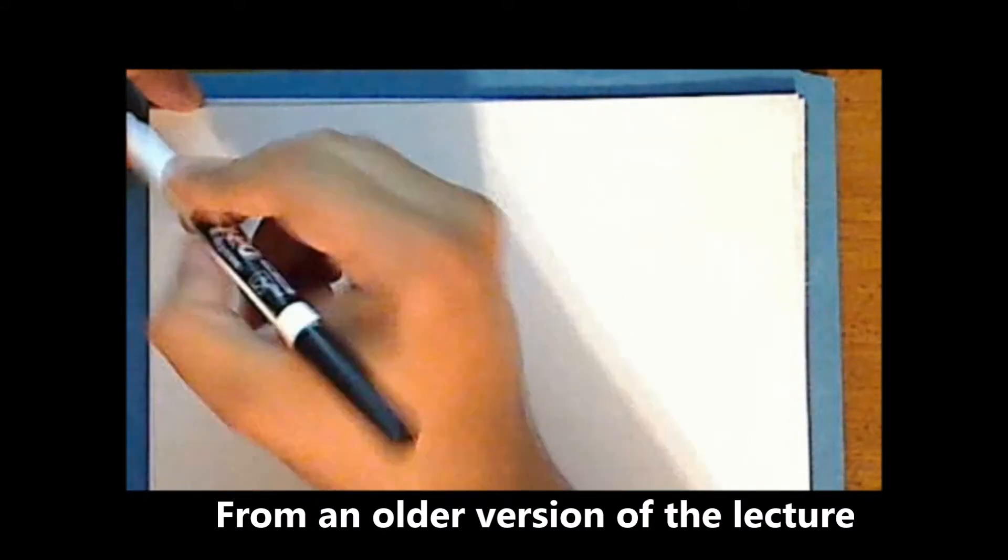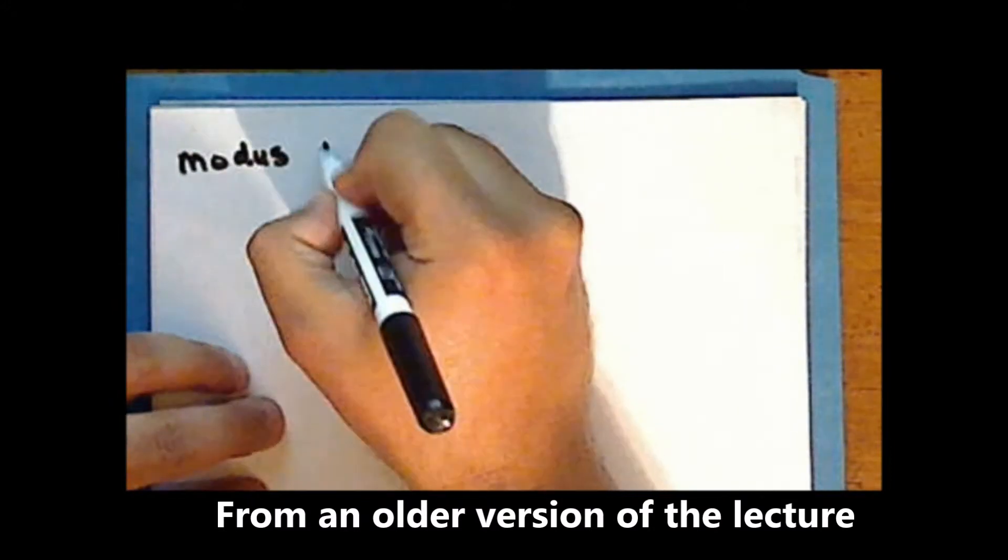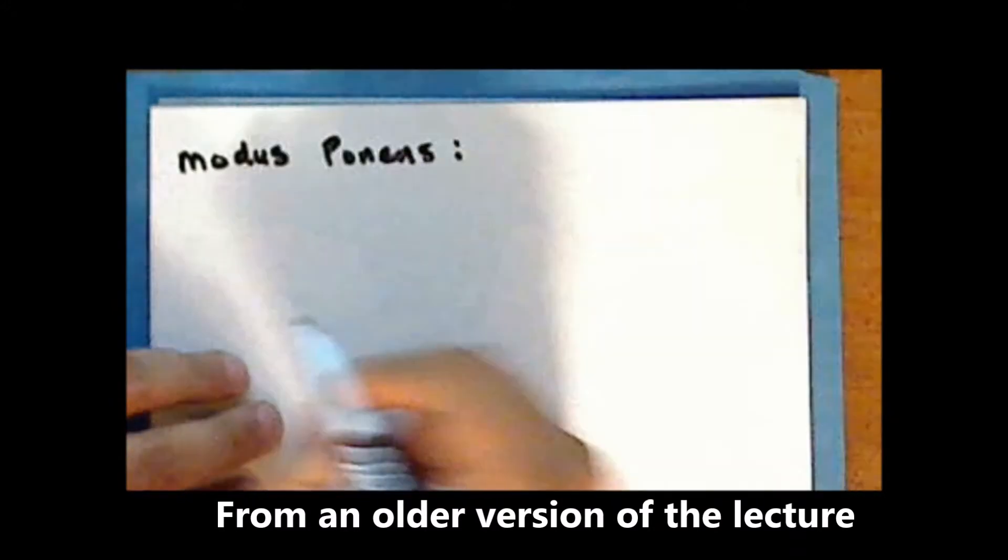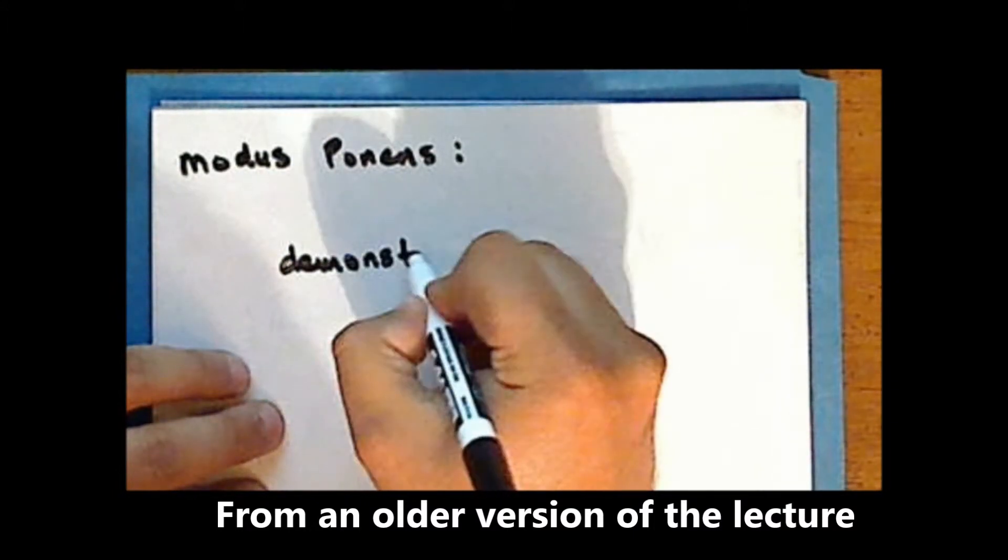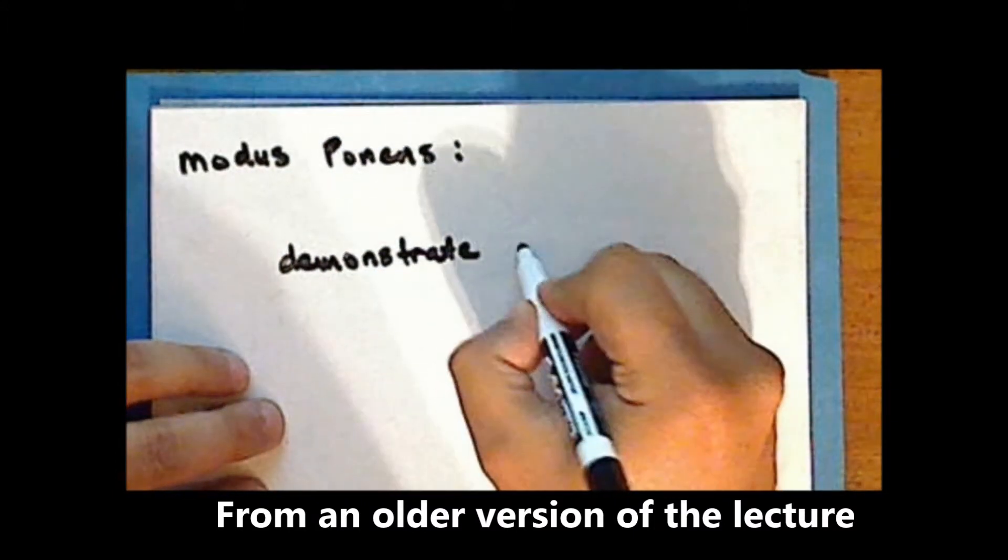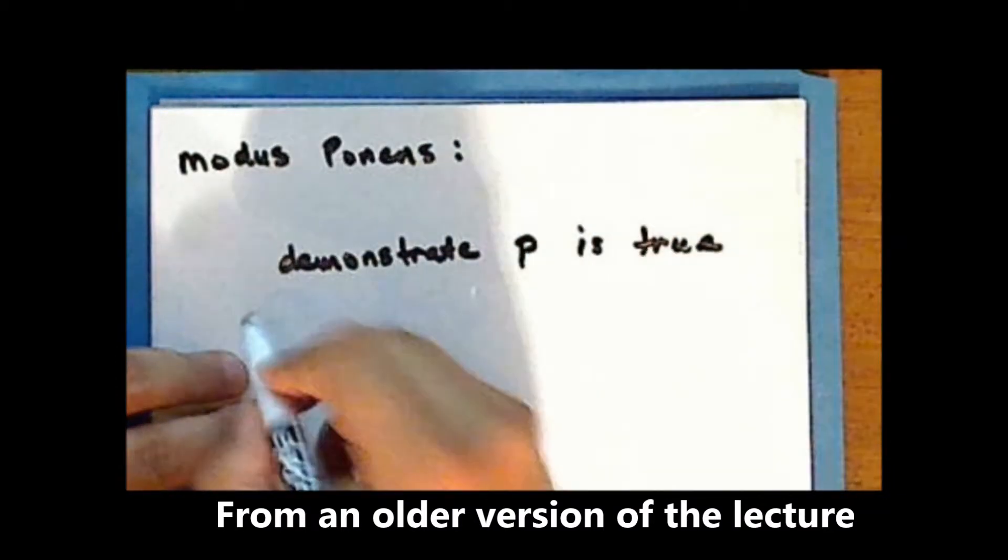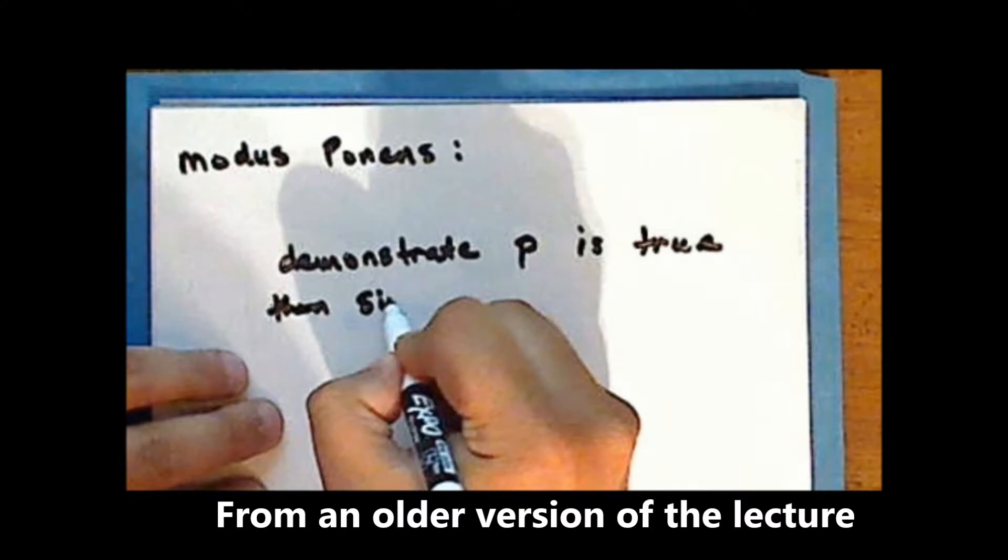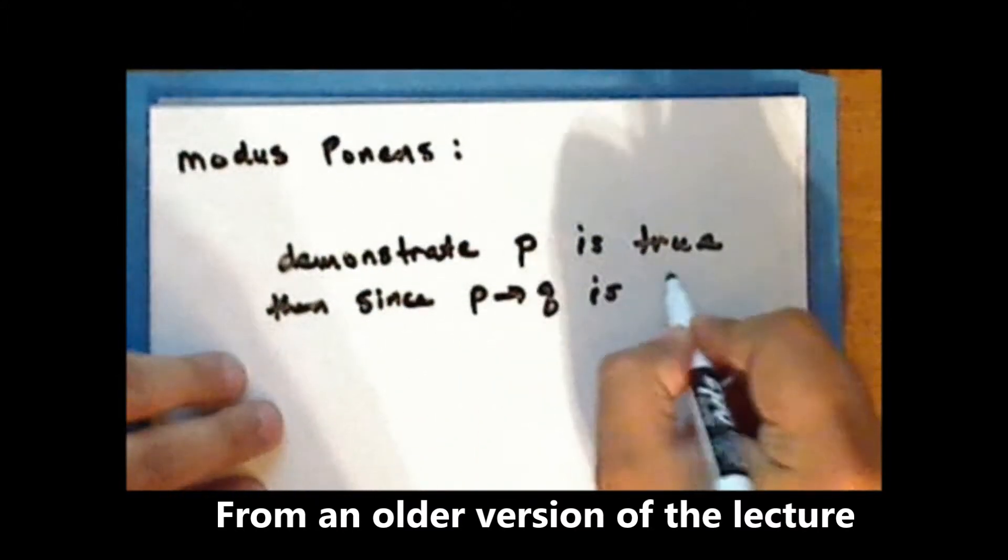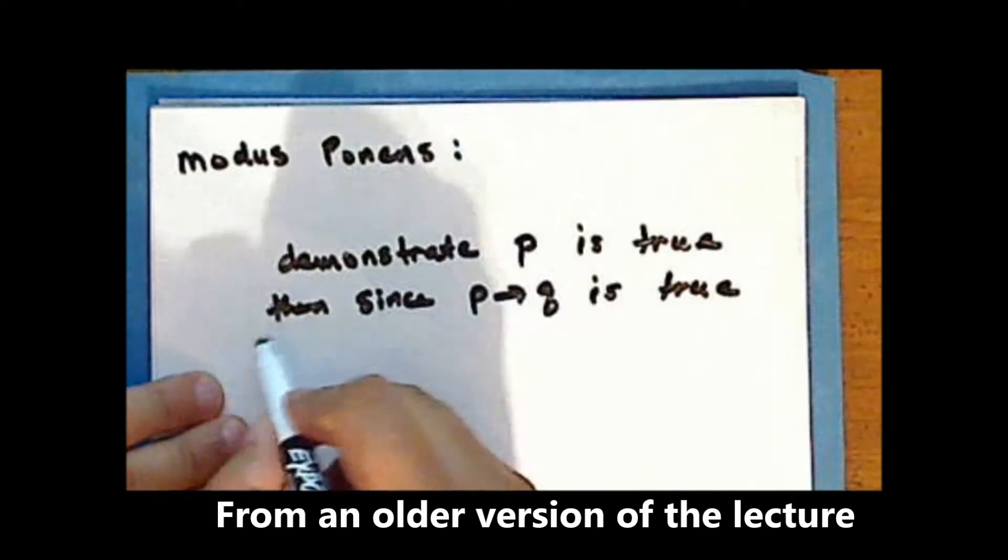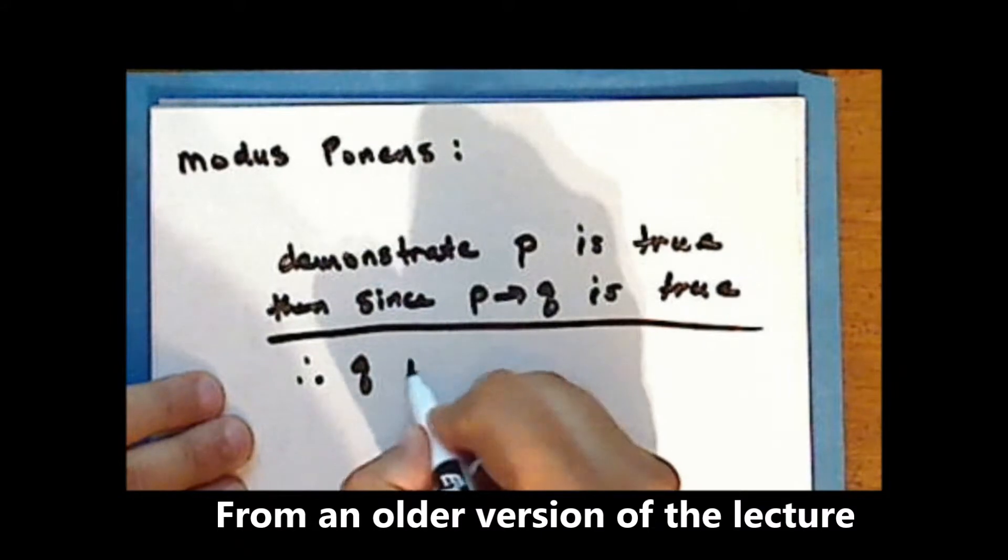So the way that modus ponens works is as follows. We must demonstrate that the statement P is true, then since the implication P implies Q is true, we can conclude that the statement Q is true.